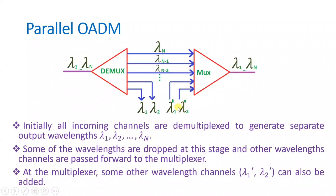In the market there are multiple types of parallel OADM available. I have explained the case for a two-wavelength parallel OADM, but for higher complexity there are four-wavelength OADMs available where you can add and drop four wavelengths, as well as eight-channel and sixteen-channel parallel OADMs. Based on the need, one can select the appropriate parallel OADM for their network.